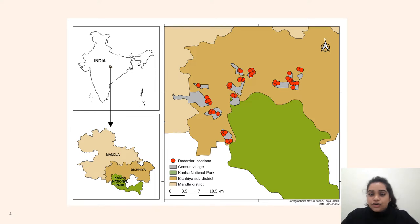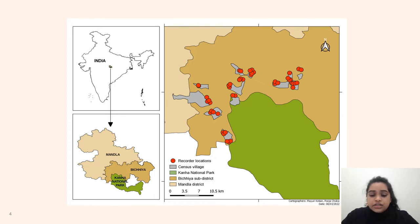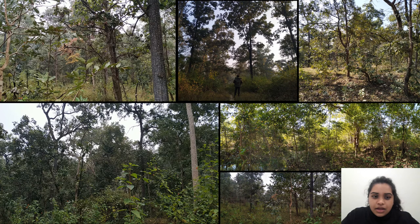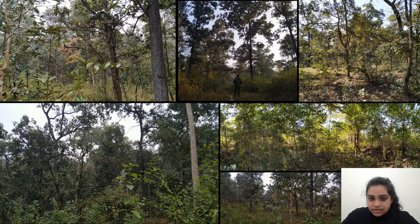We conducted this study in the officially designated buffer area of Kanha National Park, which lies in the sub-district Bichya in the district Mandla, part of the central Indian highlands — an important conservation area for threatened species such as the Bengal tiger, the Indian leopard, and the sloth bear. The landscape is dominated by tropical deciduous vegetation and holds one of the largest scheduled caste and tribe members who depend on timber and non-timber forest products. These forests form classic socio-ecological systems managed by local communities for livelihood and subsistence.